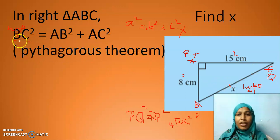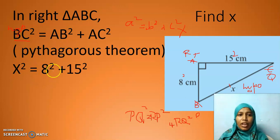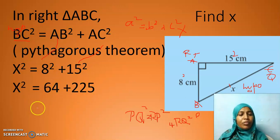Okay children. Now let us substitute the value for each and every side. We know BC is equal to x. AB is equal to 8. AC is equal to 15. x squared is equal to 8 squared plus 15 squared. AB is 8 and AC is 15. Now, what is 8 squared? 64. 15 squared, 225. Therefore, x squared is equal to 289.